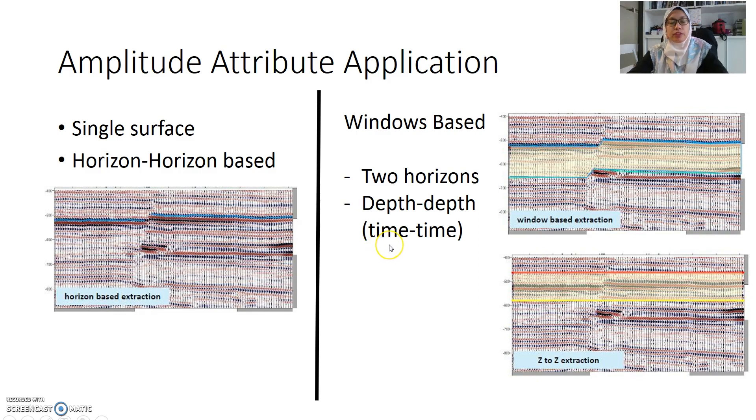Amplitude attribute can be applied based on a single surface or when you pick the horizon. This is example of horizon based extraction. And we can also use windows based, which we would like to extract the values between two horizons.